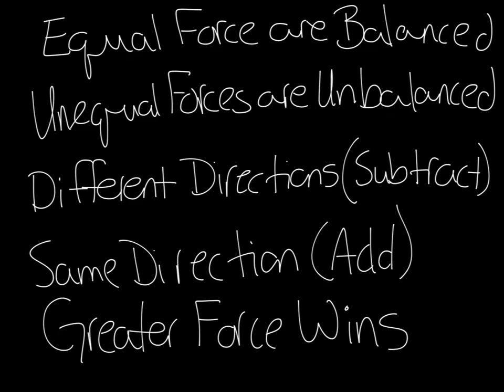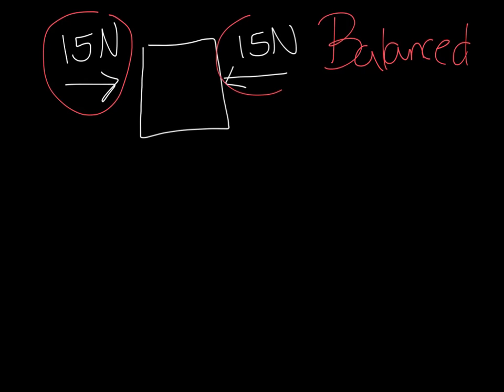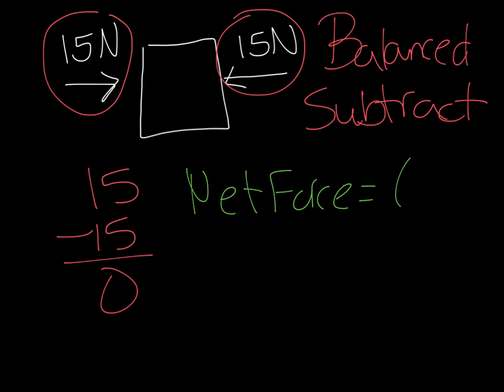Let's take a look at the first example. We have a square here — it's going to be our object — and we have two forces. The first thing we need to figure out is: are the forces equal? Look at the numbers: 15 and 15. Are they the same? Yes, they are. So we know that these forces are balanced because they're equal. Are these forces going in the same direction or different directions? They're both pointing to the box, but this force is moving to the right and this one is moving to the left, so technically they're going in different directions. If they're different directions, we need to subtract. So let's subtract them: 15 minus 15. That gives you zero. So in this case, the net force equals zero newtons.